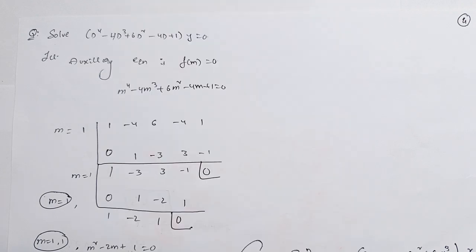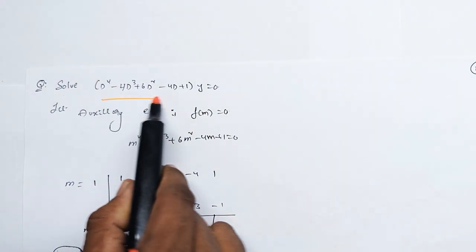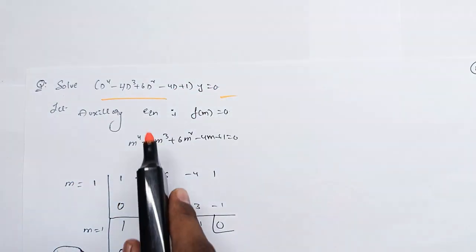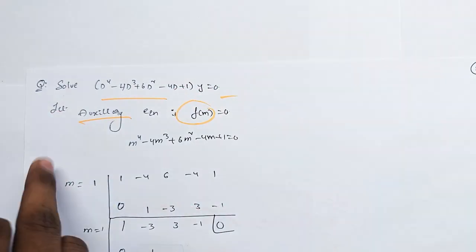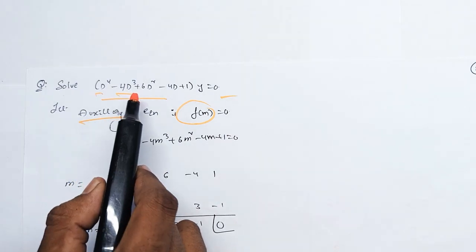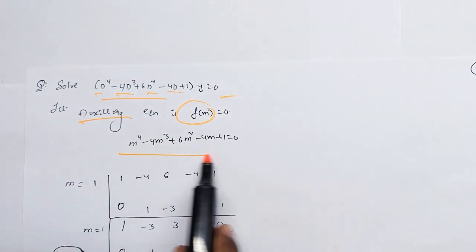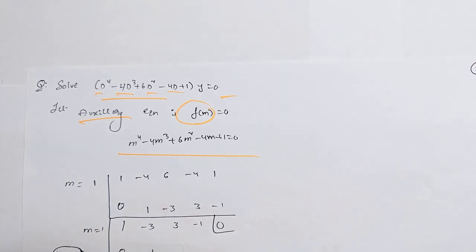So we will take the same class. I will take the same class as F of M. F of M: M power 4 minus 4M cube plus 6M square minus 4M plus 1 is equal to 0.